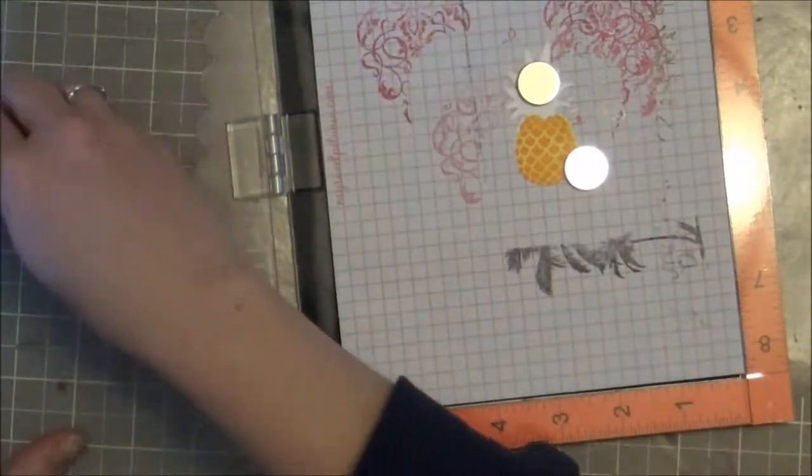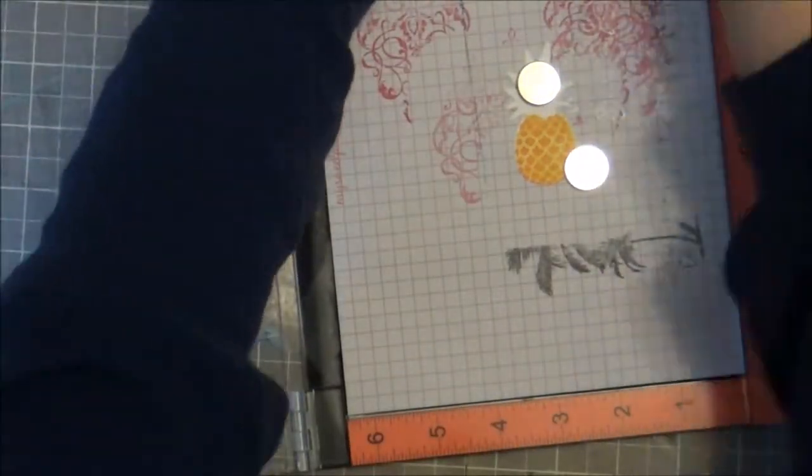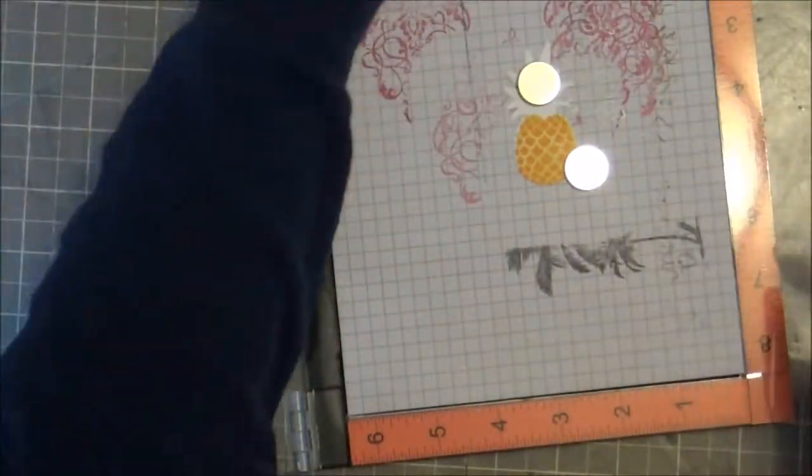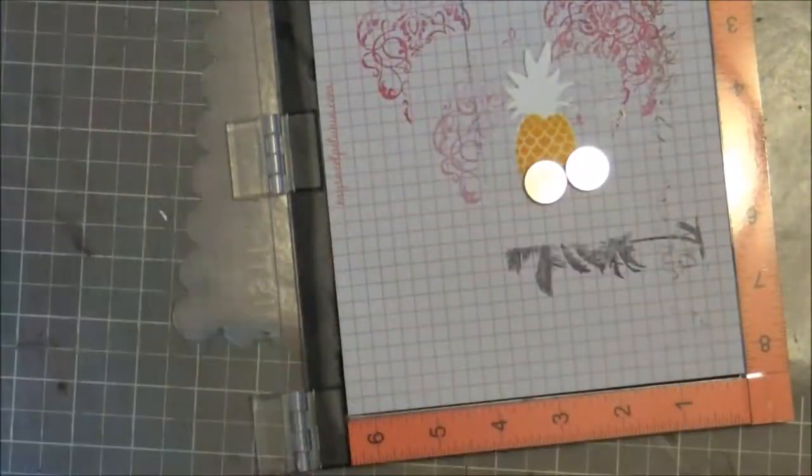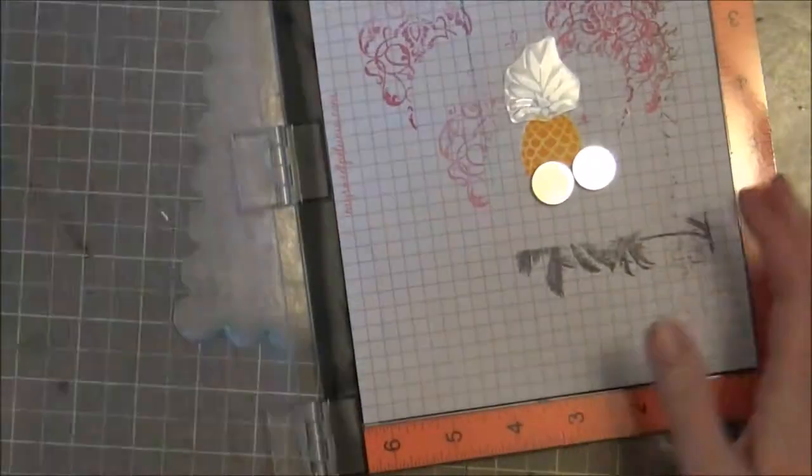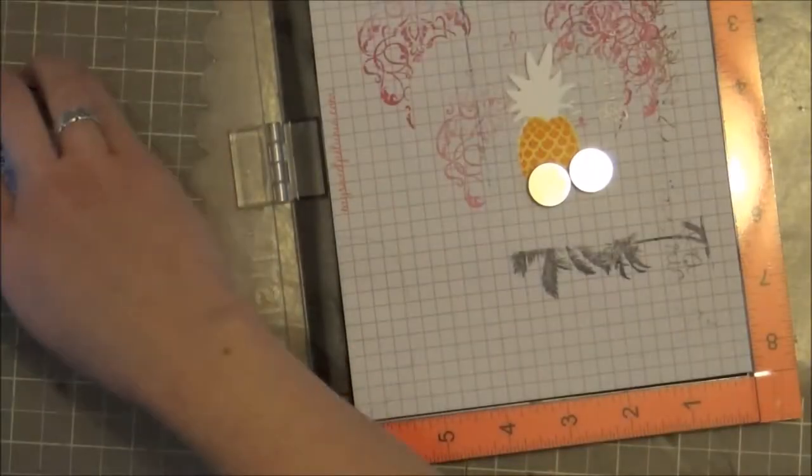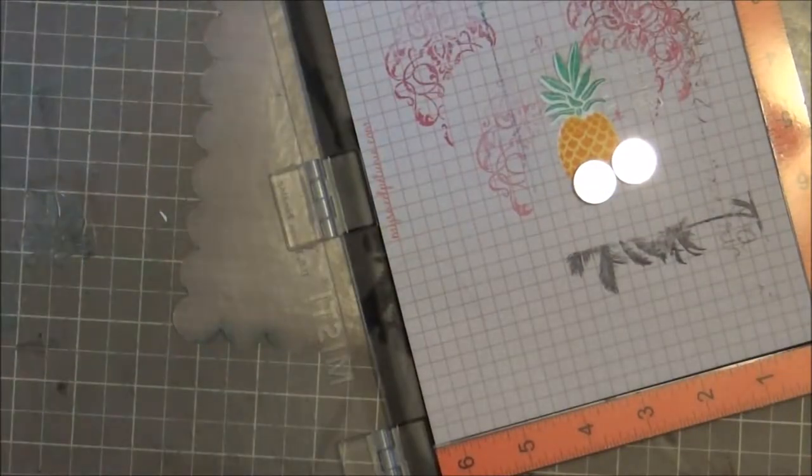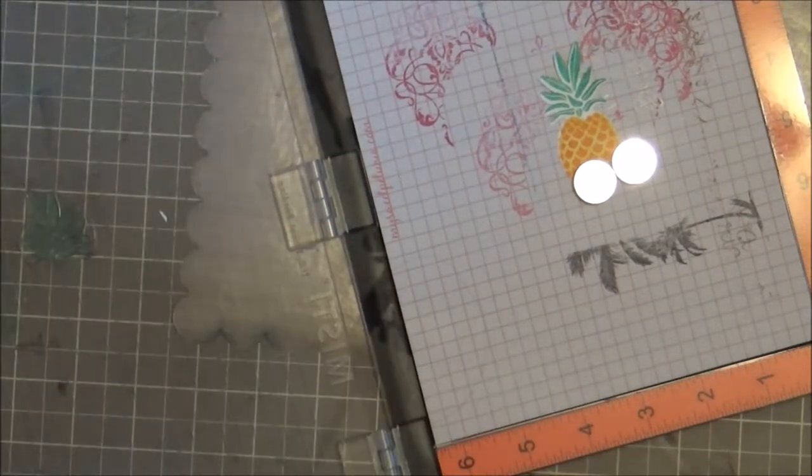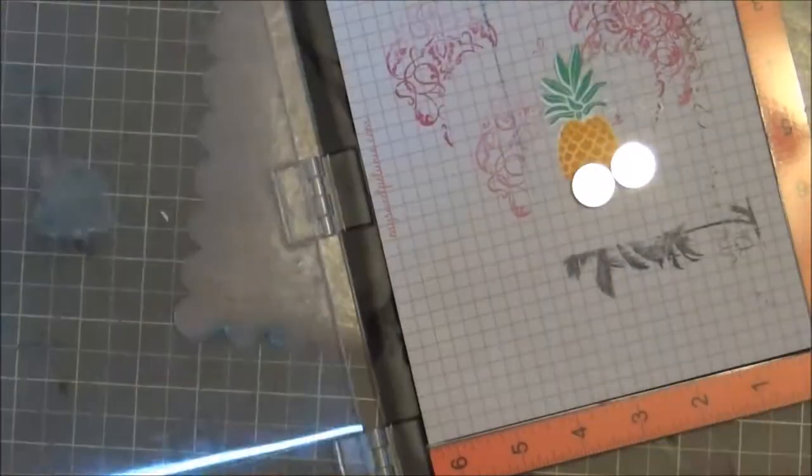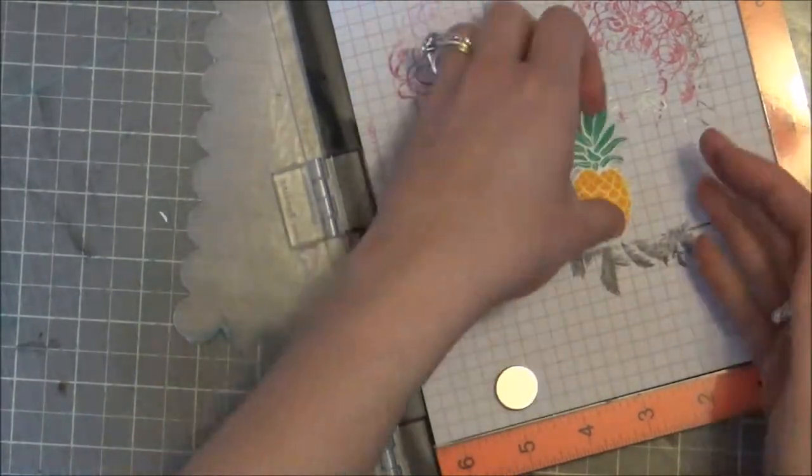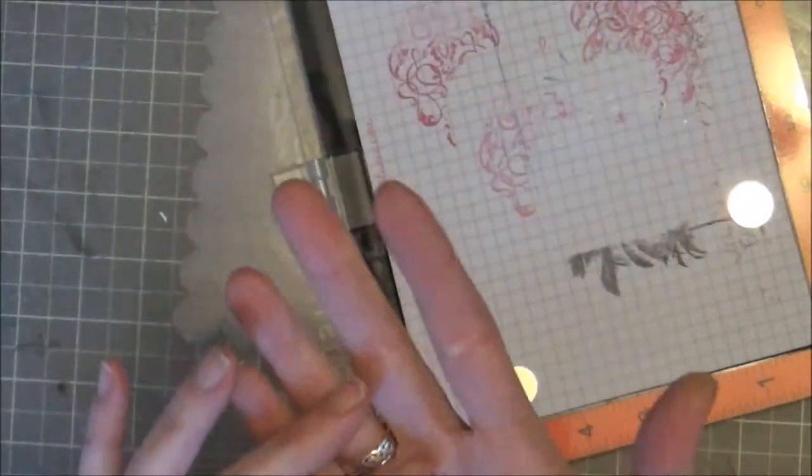Here I'm using my Misti, which again is fantastic for using these multi-step stamps. It allows you to line up your stamp, as I'm doing here with the top of the pineapple. Then I can ink it, stamp, stamp again, and if I need to I can re-ink and everything stays in place. I can't do this with a normal block, so I love this tool.